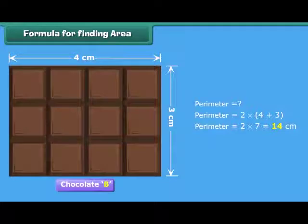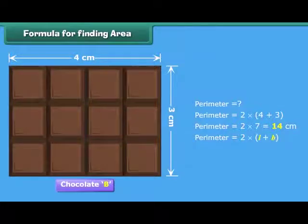Alternatively, perimeter is equal to twice the sum of the length and width.